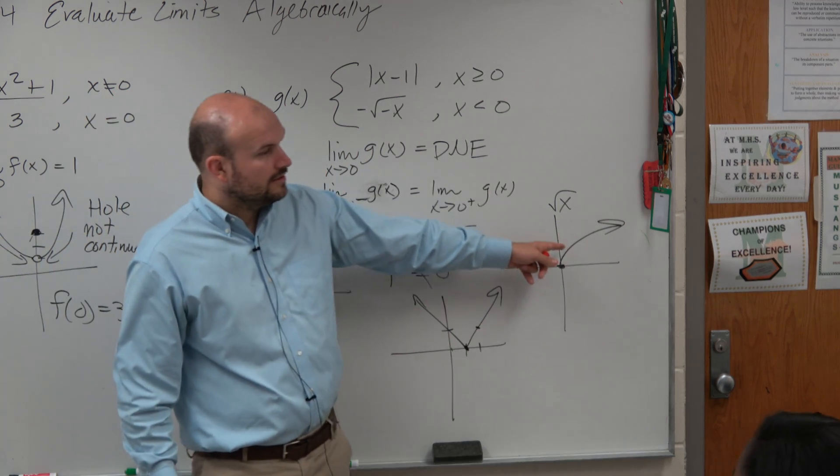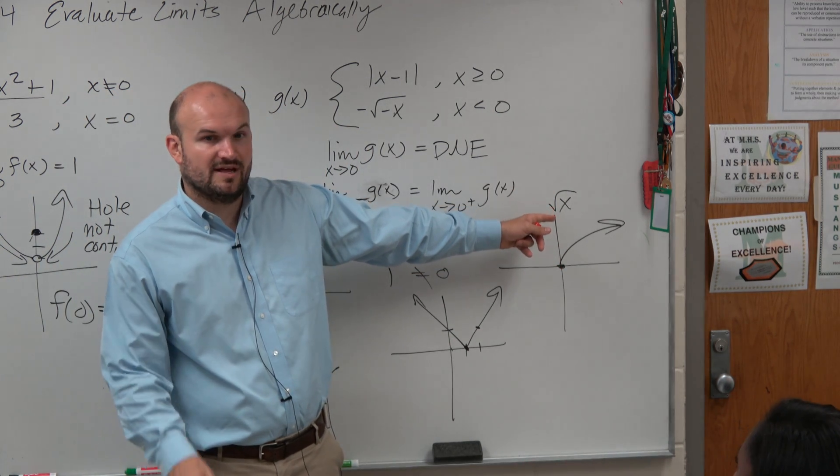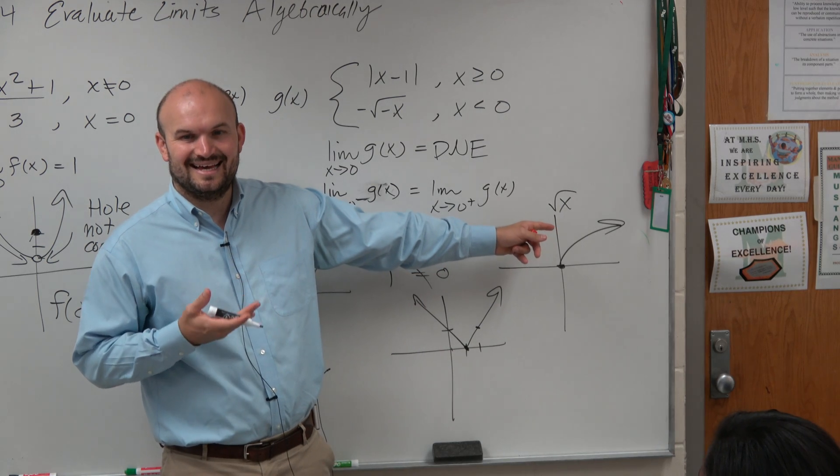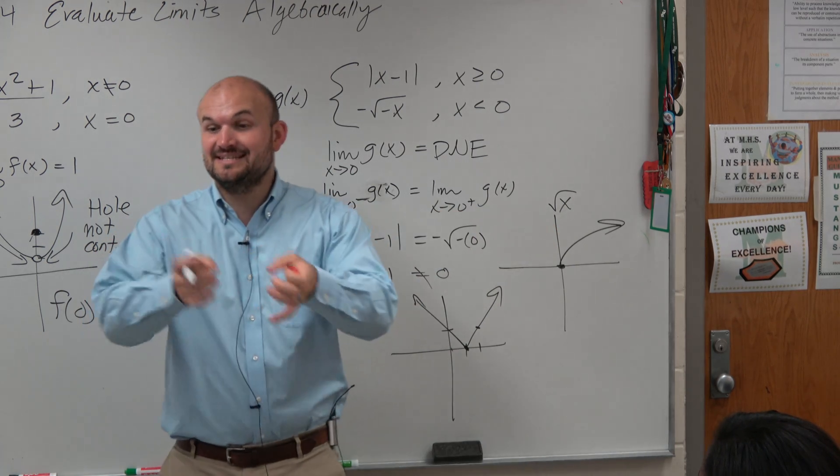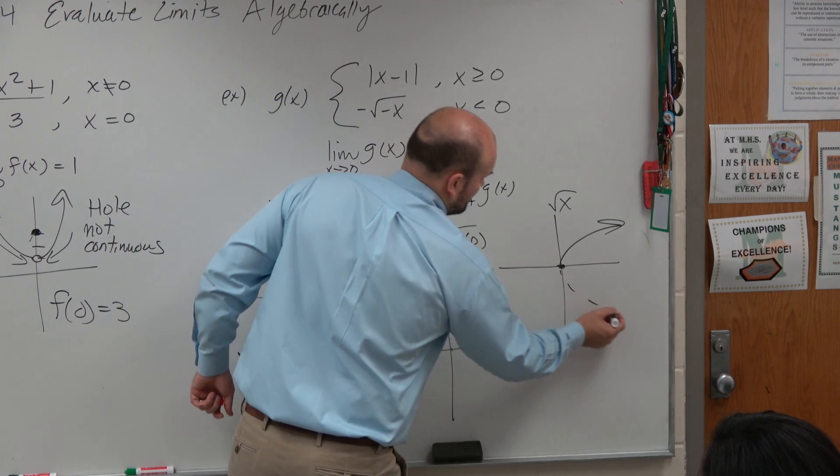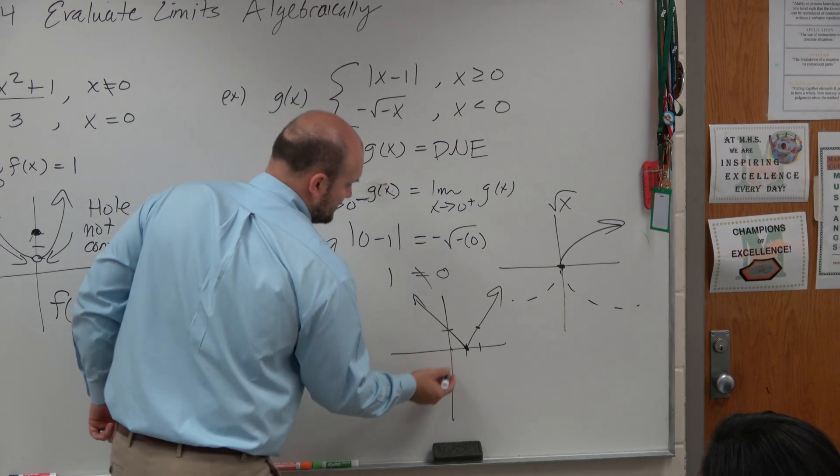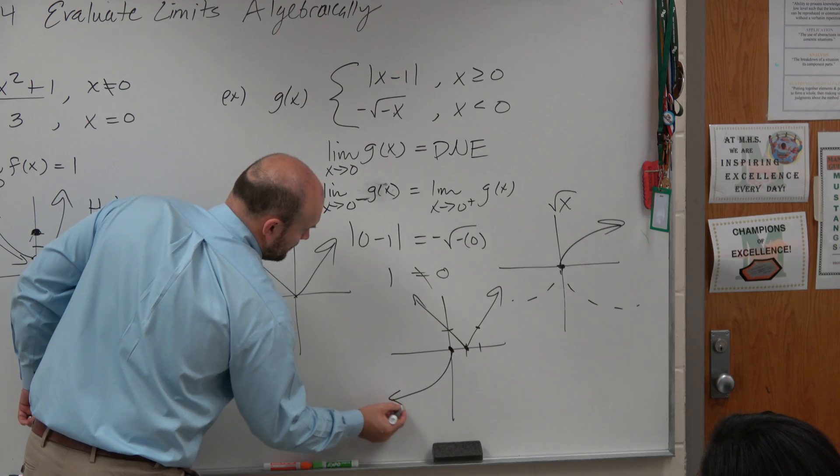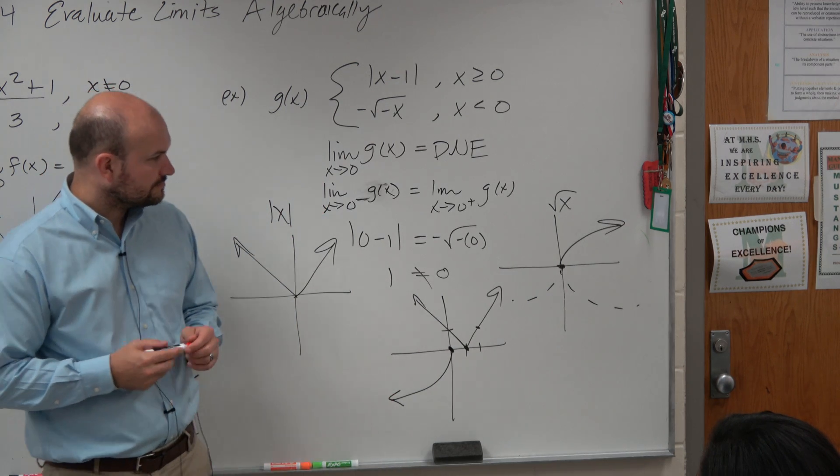Now here, when you have a negative on the outside, that reflects it about the x-axis, and a negative on the inside reflects it about the y-axis. So basically, we're taking this, reflecting it one way, reflecting it the other way. So that looks like that. All right?